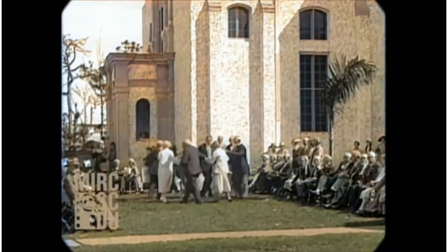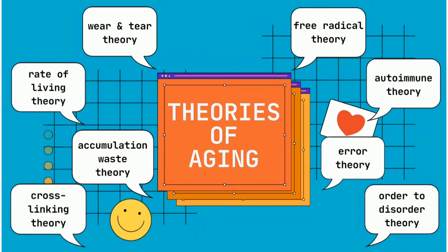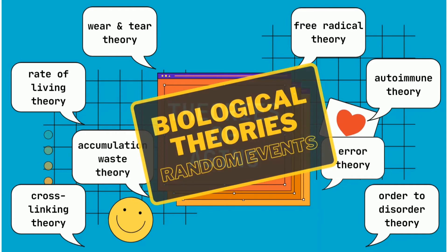Why do we age? Is there an exact single reason as to why humans age? There are now dozens of theories of aging to explain this inevitable fact of being human. In this video, we'll be explaining the biological theories and random events. These theories all attempt to explain aging in terms of cellular and molecular changes.